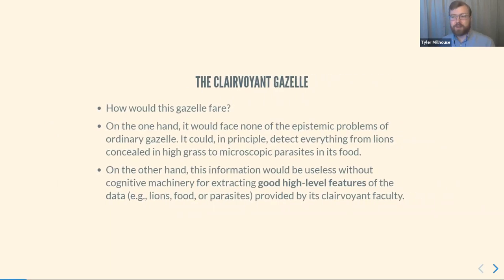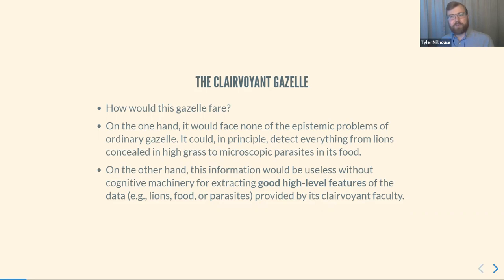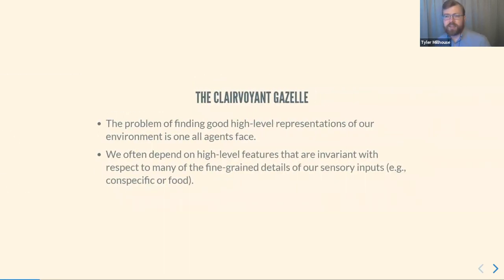The question I want to ask about that gazelle is, how would it fare? On the one hand, it would face none of the epistemic problems of ordinary gazelles — it wouldn't need to worry about whether a lion was hiding in the grass, because it could, in principle, detect the lion. Or if there are parasites on its food, it could detect those. But on the other hand, this information would be completely useless unless it had the cognitive machinery required to extract good high-level features of that data — things like lions, food, parasites, and so on. I think this is a problem all agents face, not just this special gazelle. We're isolating one element: the problem of abstraction, setting aside the epistemic part about inferring the environment from a noisy signal.